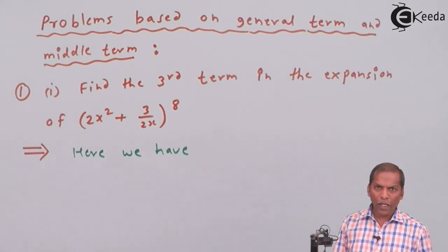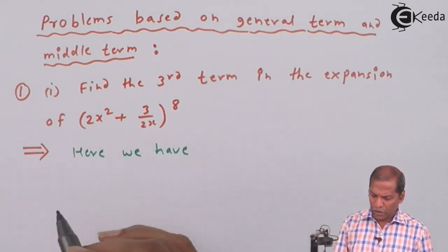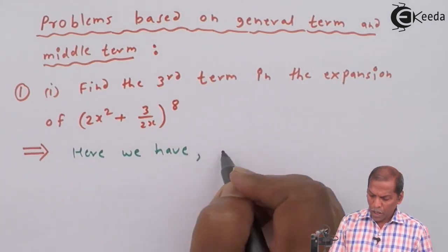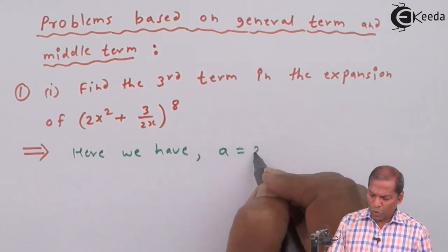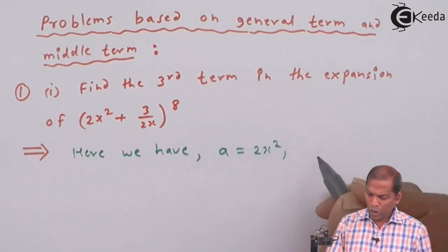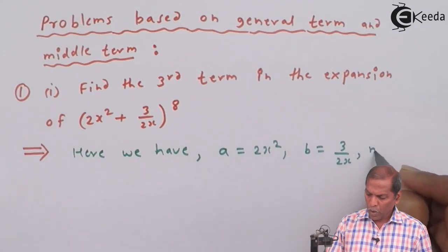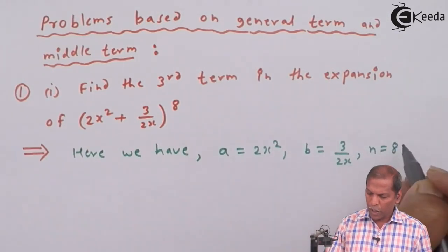On comparing with that bracket we get a = 2x², then b = 3/2x, and n = 8.